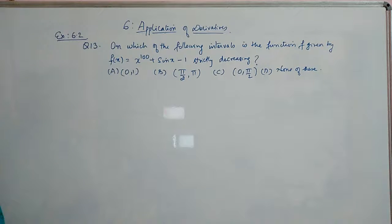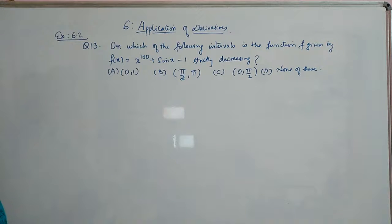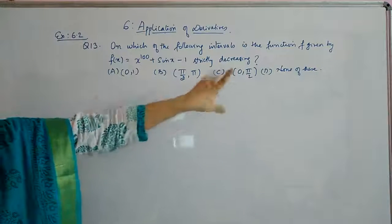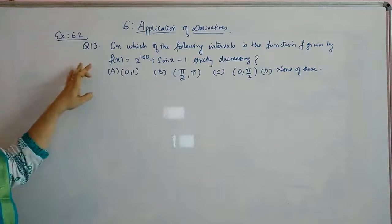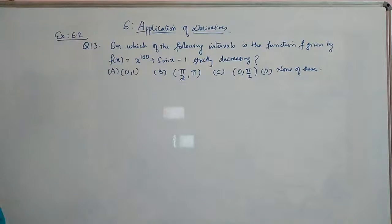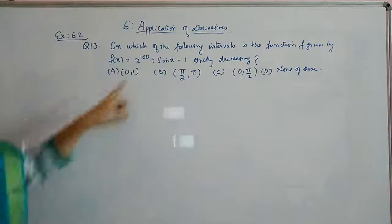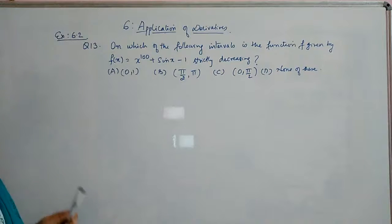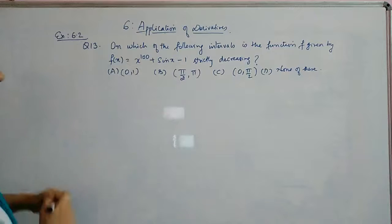Question number 13. On which of the following intervals is the function f given by f of x equal to x raised to 100 plus sin x minus 1 strictly increasing? You have been given three intervals and the option 'none of these'. You have to check in which intervals the function is strictly decreasing, meaning f dash of x is less than 0.